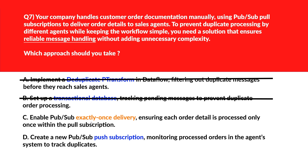Option C says enable Pub/Sub exactly-once delivery. Exactly-once delivery ensures messages are consumed a single time, preventing duplicate processing without extra complexity — this is the potential answer. Option D says create a new Pub/Sub push subscription. Push subscriptions monitor processed orders but do not control duplicate message handling in pull subscriptions — we'll reject it. We'll lock option C as the right choice.